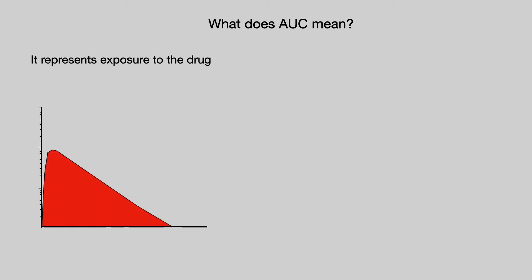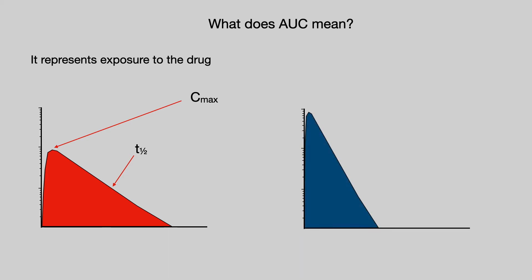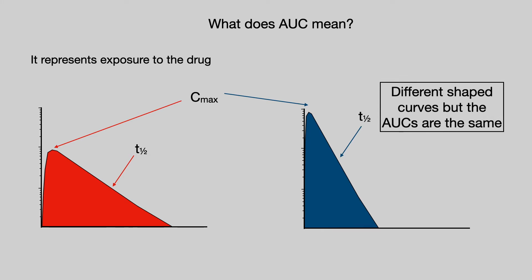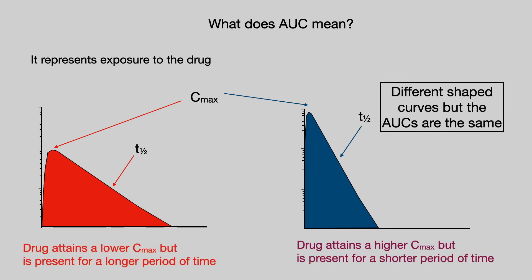Let's look at two concentration time plots. The red one has some Cmax and some half-life, and the blue plot has a different Cmax and a different half-life. The shape of these plots is very different, but the AUC could be exactly the same. In the red plot, the drug attains a lower Cmax but is present for a longer period of time. In the blue plot, the Cmax is higher but it is present for a shorter period of time. So the exposure for the red and the blue plot could be exactly the same.